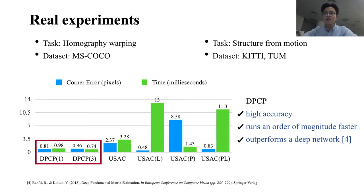Finally, we experiment on homography warping and structure from motion using real datasets. Results show that DPCP performs on par with USAC while running an order of magnitude faster. It also outperforms a recent deep learning approach.